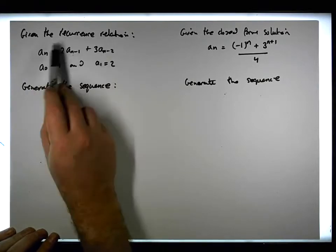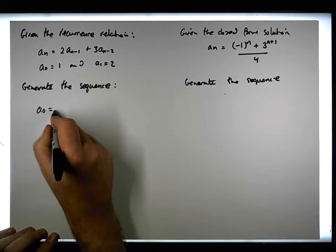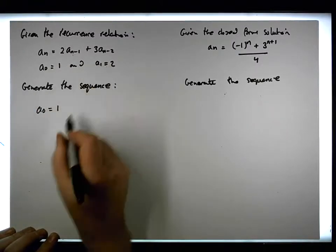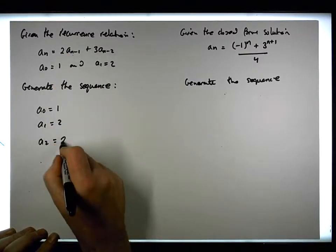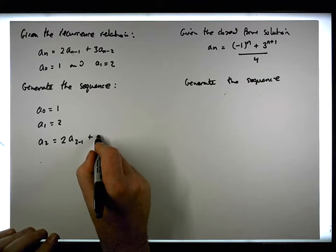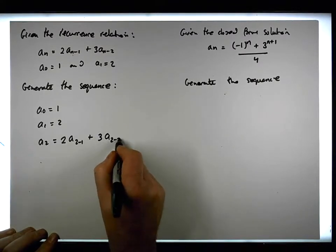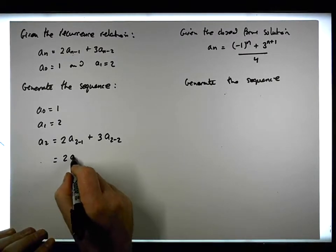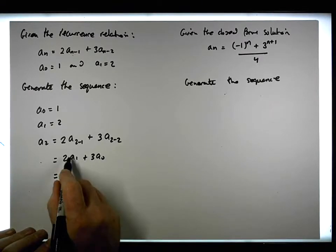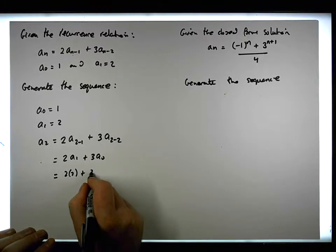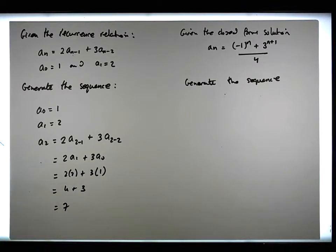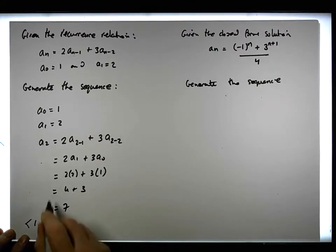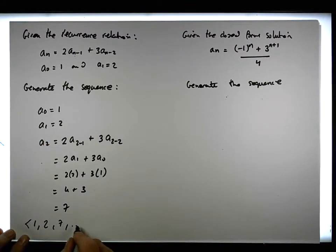From the recurrence perspective, you can see that a₀ is clearly equal to one and a₁ is equal to two. What about a₂? Well, a₂ is equal to 2 times a₁ plus 3 times a₀, which is 2 times 2 plus 3 times 1, giving us 4 plus 3, which gives us 7. So the first three terms of the sequence are 1, 2, 7.